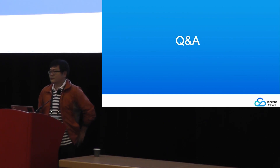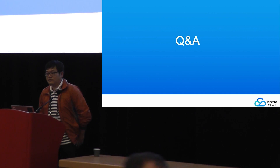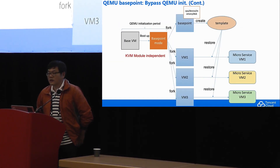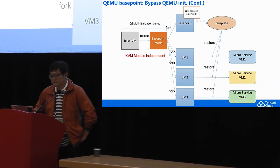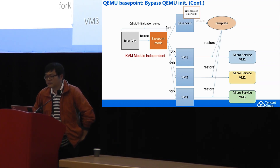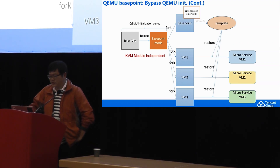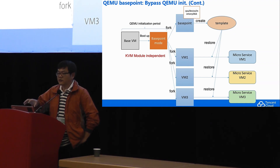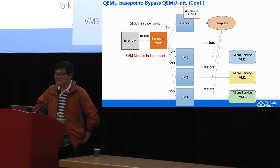Any questions? Could you go back a few slides? I just wanted to understand — you do a fork to create a number of different QEMUs that are ready to run, and then you restore from your template after the fork. Does a fork only ever run one microservice and then get thrown away, or does it get reused to run an additional microservice later? Okay, so you just saw the top line. This is what we use to create a template. We boot up the base VM to a base point mode and then fork it from the original process to get the base point VM. Then we use the base point VM to create a template. Right, so the template isn't already there — it's the first thing created. Yeah, we first create a template. Thanks.